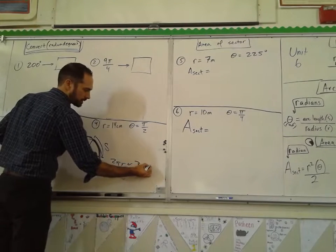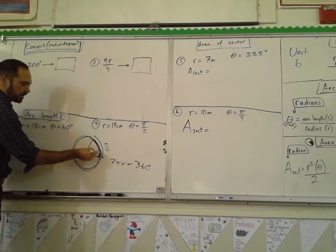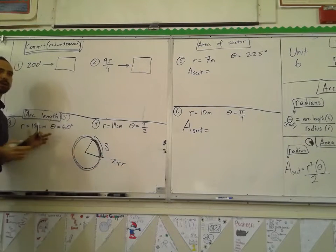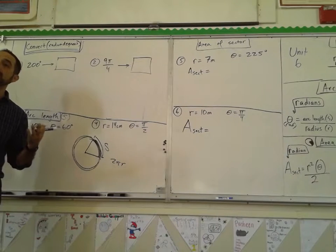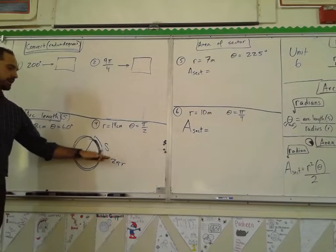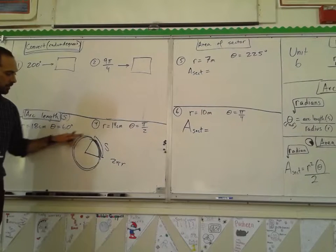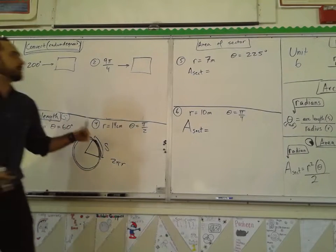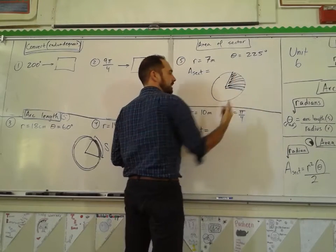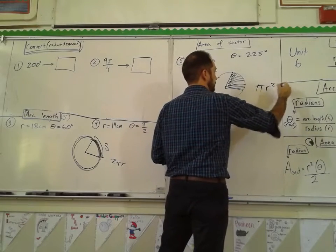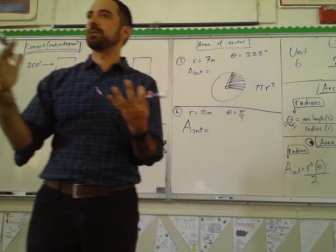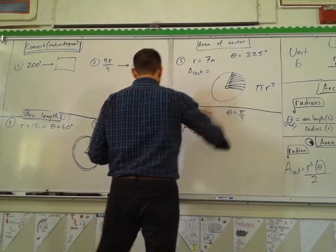We figure out arc length by taking the circumference and multiplying by some ratio. 360 degrees is all the way around — if I went halfway, that's 180 over 360. For area of a sector, we have a central angle and the area of the whole circle is πr², then multiply by a ratio of the radian or degree measure.